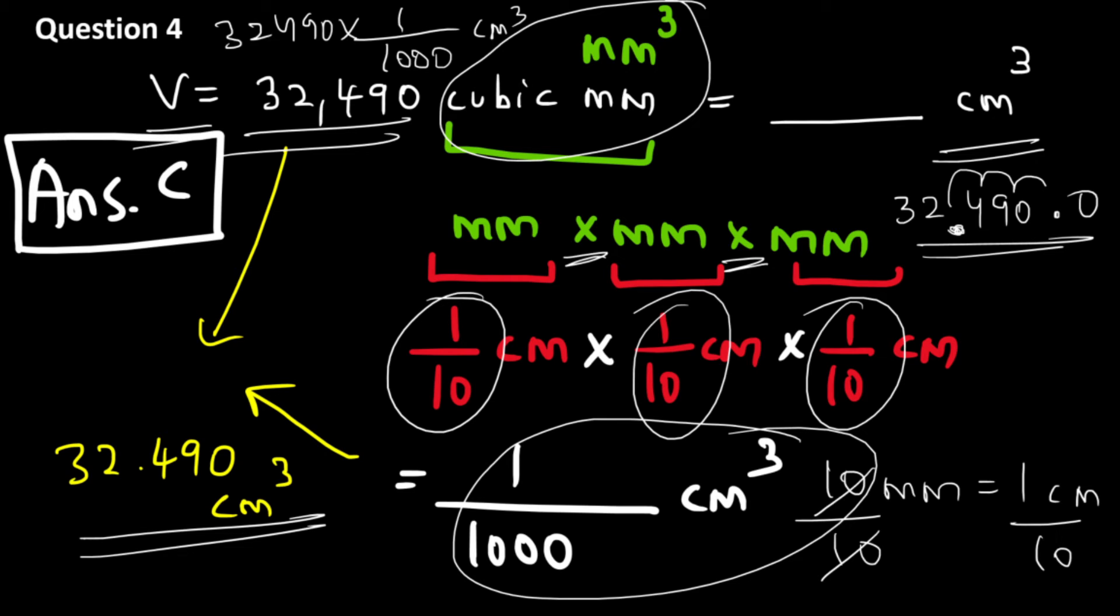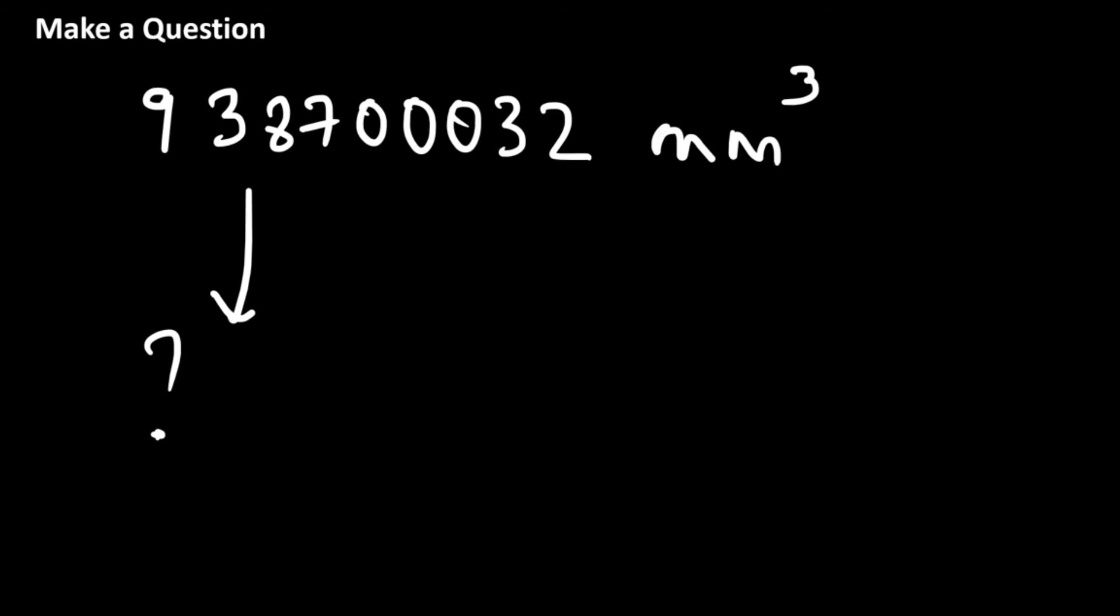Now we have learned an interesting concept. To solidify this learning and to ensure that you will never make a mistake in these type of questions, let's quickly make a question of our own. So I just take a random big number. I have 938,700,032 and let's say this is in millimeter cube and let's say I want to convert this into meter cube. In the previous question, we were converting into centimeter cube. Let's convert it into meter cube.